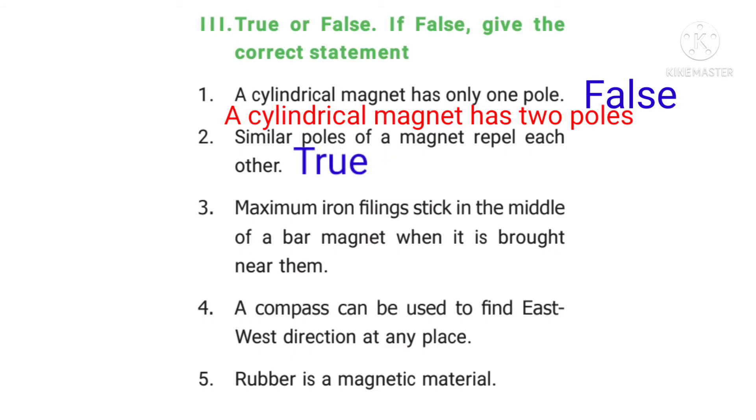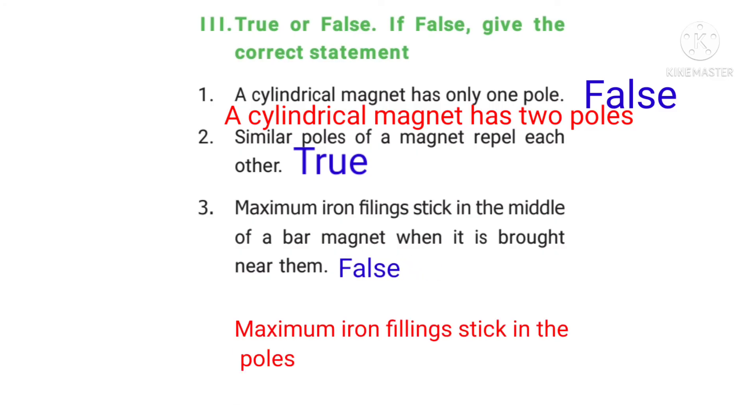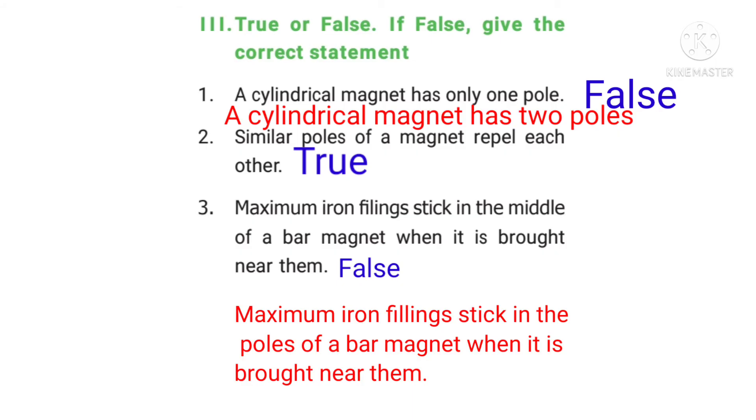3rd question: Maximum iron fillings stick in the middle of a bar magnet when it is brought near them. Answer: False. The correct statement is, maximum iron fillings stick in the poles of a bar magnet when it is brought near them.